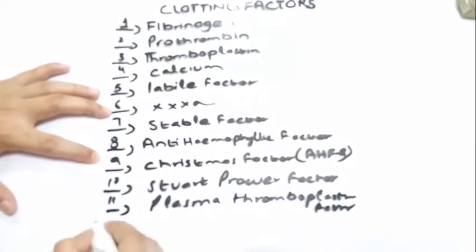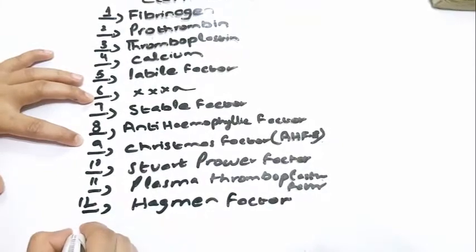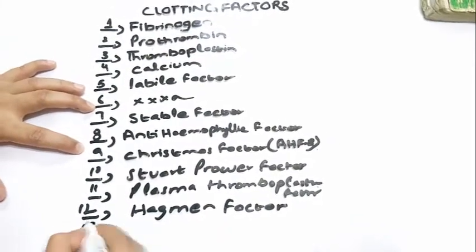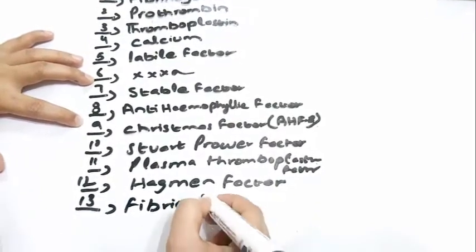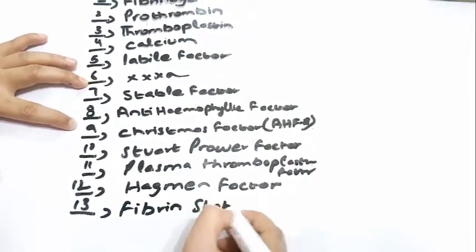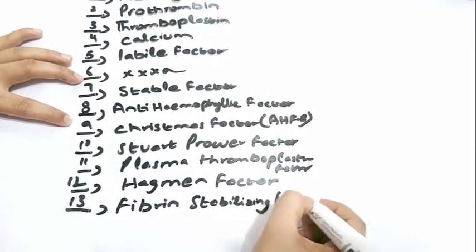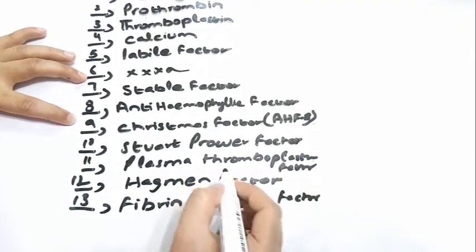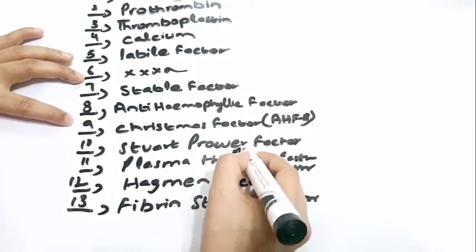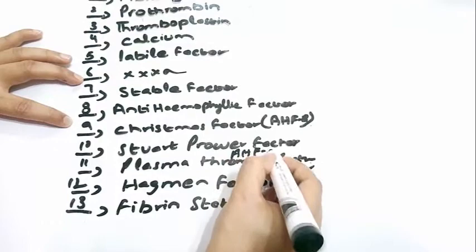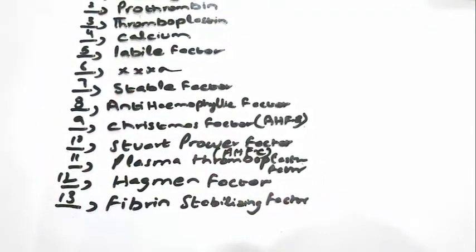Factor 12: Hageman's factor. Factor 13: Fibrin stabilizing factor. Plasma thromboplastin factor is also called anti-haemophilic factor C. So in order to remember these factors, we will create a mnemonic.